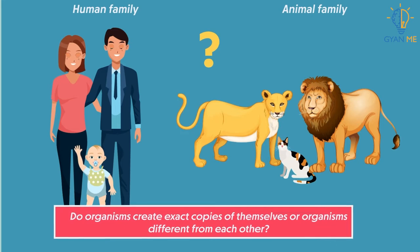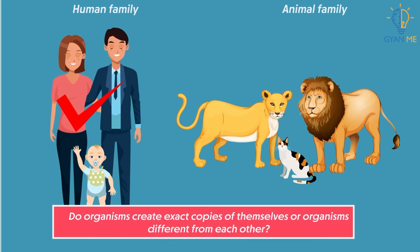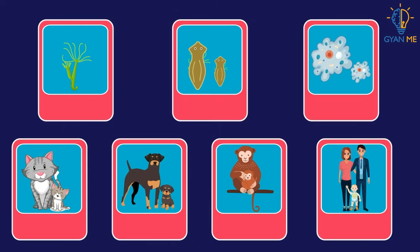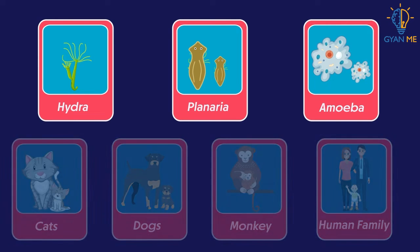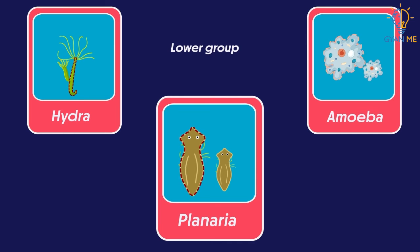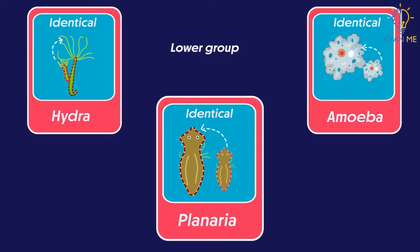Do organisms create exact copies of themselves, or do they reproduce identical or different organisms? Students, pause the video and try to answer this using your observational skills. Now observe some of these pictures. The first one is of Hydra, the second is of Planaria, the third shows ants, and the fourth and fifth pictures are of cats, dogs, and monkey. The last one is of a human family. Look at these pictures of lower group of animals — they have simple body designs. In all these animals, offspring are identical to their parents and also to each other.